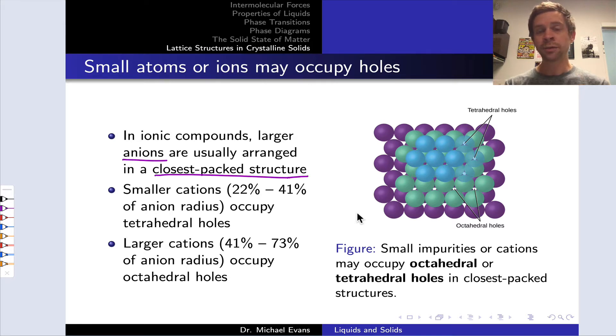Whether the cation is very small or just a little bit smaller than the anion on the same order of radius dictates which type of hole the cation ends up in. Smaller cations tend to occupy what we call tetrahedral holes in the closest-packed lattice.